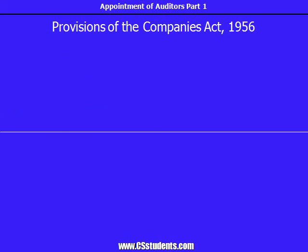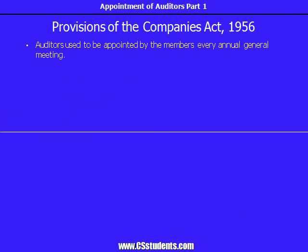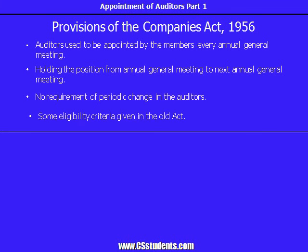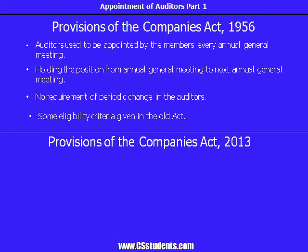In the old Companies Act, the auditors used to be appointed by the members, or we say shareholders, every year in the annual general meeting. Such auditors were holding the position from one annual general meeting to the next annual general meeting, broadly covering one financial year. There was no requirement to change the auditors after a particular period. Therefore, companies continued with the same auditors for years. There were also some eligibility criteria given in the old Act. The new Act also goes on similar lines, with some changes.